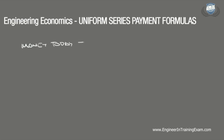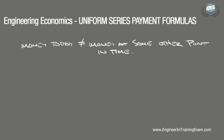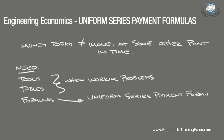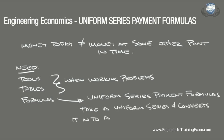As explained in a previous video, money today does not have the same value as money at some point in the future. For this reason, we need tools, tables, formulas, and various economic factors to reference when it is necessary to compare two complex alternatives. A series of these formulas are known as the uniform series payment formulas, which take a uniform series of transactions continuing over a specified period of time and convert it into a single equivalent value at some other point in time.